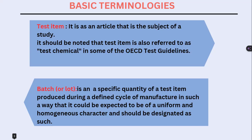Next is 'batch or lot number' — a specific quantity of test item produced during a defined cycle of manufacture in such a way that it could be expected to be uniform. A batch number is a specific number given to a product showing its uniformity and from which batch the product was produced.